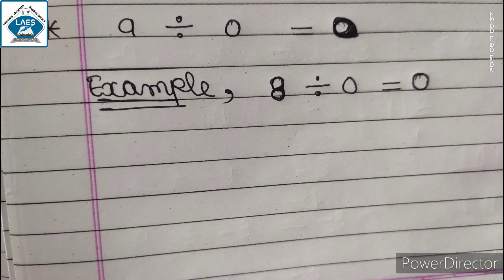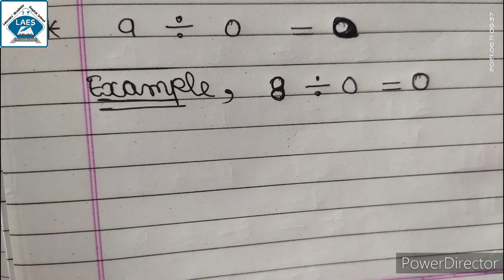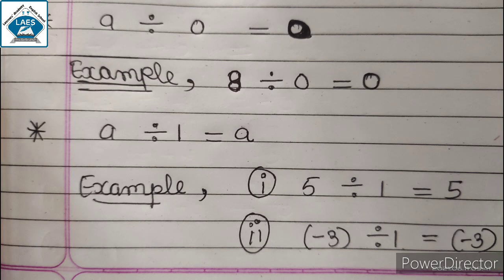Now let's check properties of division. The commutative property and associative property will not work in the case of division. The first property is: A divided by 0 equals 0, where A is not equals to 0. For example, 8 divided by 0 equals 0. कोई भी integer को 0 के साथ divide करेंगे, तो answer always 0 ही आएगा.